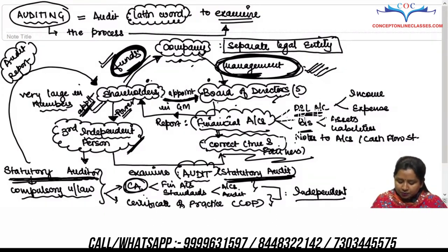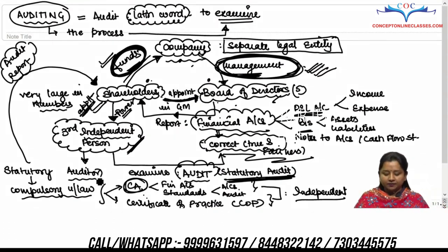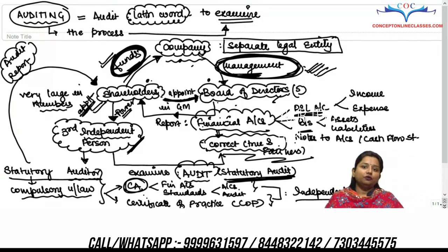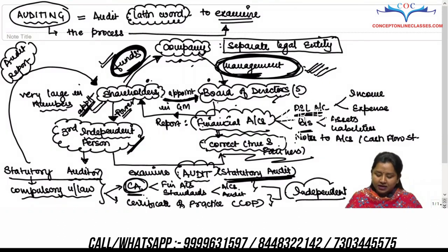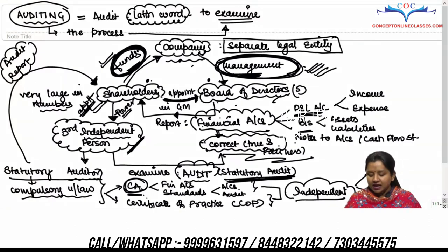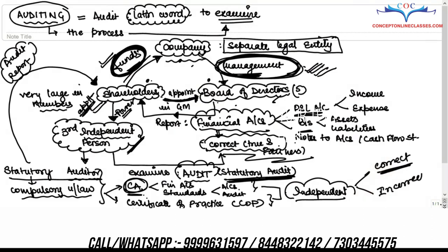The person who conducts the audit is called the auditor. Because this audit is compulsory under the Companies Act, it is called statutory audit and the auditor is called statutory auditor. Since this statutory auditor is examining financial accounts, we presume they must be an expert in preparation and maintenance of financial accounts — therefore the condition is that he must be a CA having a Certificate of Practice, so he can pass an independent decision and report to shareholders under the audit report.